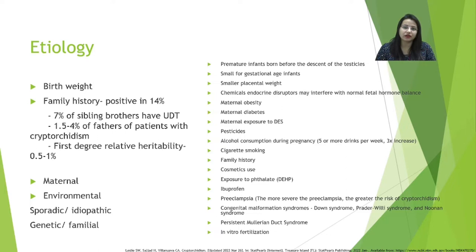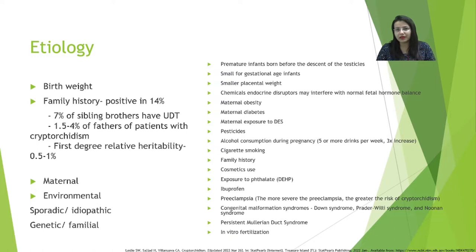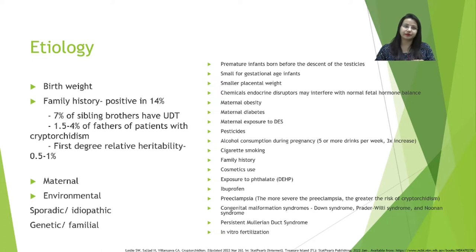Family history is another important factor, positive in 14% of patients with undescended testis. Seven percent of sibling brothers of a patient with undescended testis will also have undescended testis, and around 3 to 5 percent of fathers of patients with cryptorchidism will have the same issue. There are also various maternal, environmental, and genetic associations, as undescended testis is common in many syndromes seen in children, along with sporadic or idiopathic causes.